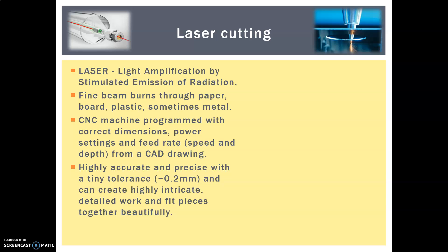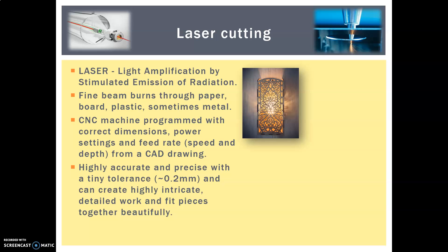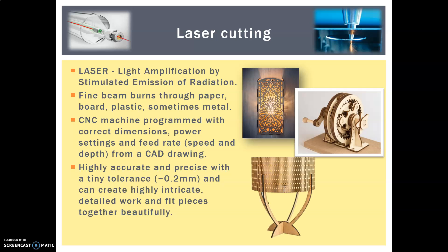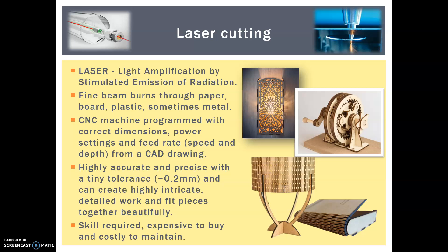Laser cutting is highly accurate and precise with a tiny tolerance — only the width of the beam, which is about 0.1 to 0.2 millimetres wide. It can create highly intricate, detailed work and have pieces fit together really well, even making things like cogs for machinery in school. You can also create something called a living hinge, which turns a flat piece of material into a curve for things like lamps and little cases. The only downside is that you do have to be fairly skilled to work it, the machinery is expensive to buy, and it can be costly to maintain with things like extraction.